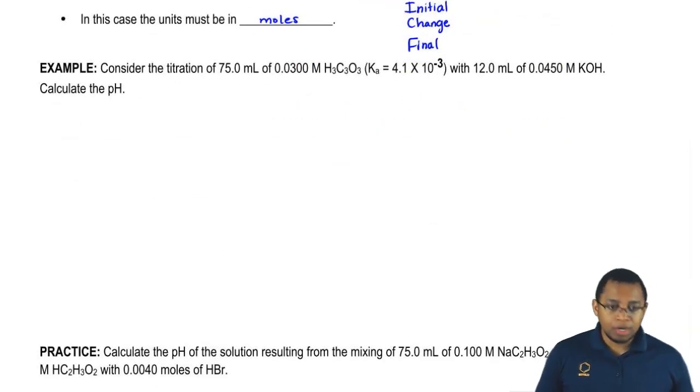Let's take a look at this example here. Consider the titration of 75 mL of 0.0300 molar H3C3O3, which has a Ka of 4.1 times 10 to the negative 3, with 12 mL of 0.0450 molar KOH. Calculate the pH.